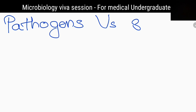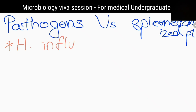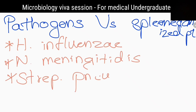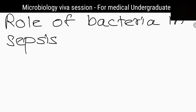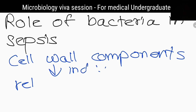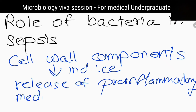Tell me three pathogens that splenectomized patients are more susceptible to. Haemophilus influenzae, Neisseria meningitidis, and Streptococcus pneumoniae. Tell me the role of bacteria in sepsis. Their cell wall components like lipopolysaccharides and peptidoglycan can induce release of pro-inflammatory mediators like cytokines and initiate sepsis.